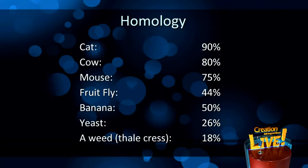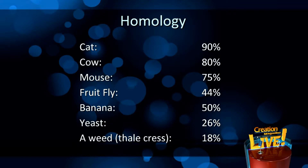Between a cat and a person there's 90% similarity — that's a phenomenal figure. Cow: 80% similarity. We're 50% similar to bananas. Mice: 75%. Yeast: 26%. A weed: 18% similarity.